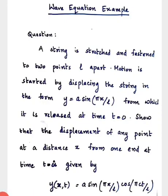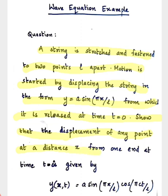Good morning everyone. In today's session we will be discussing a problem based on the wave equation. The question is: a string is stretched and fastened to two points L distance apart. Motion is started by displacing the string in the form y equal to a sin(πx/L), from which it is released at time t equal to zero. Show that the displacement of any point at a distance x from one end at time t is given by y(x,t) equal to sin(πx/L) cos(πct/L).